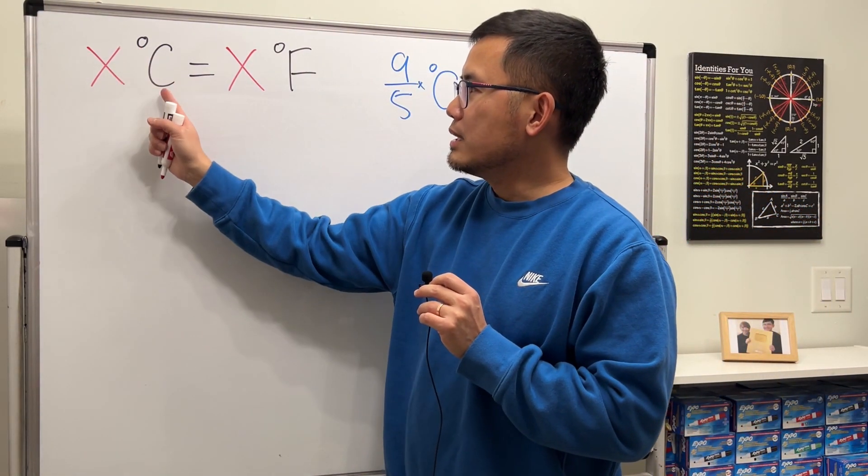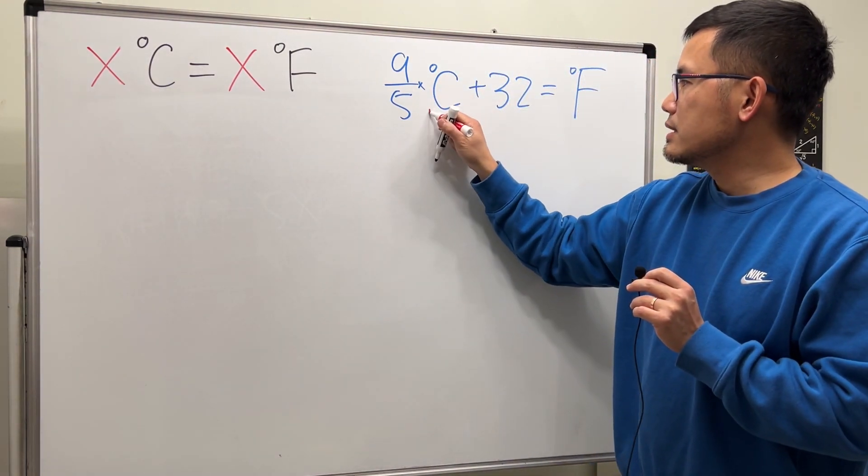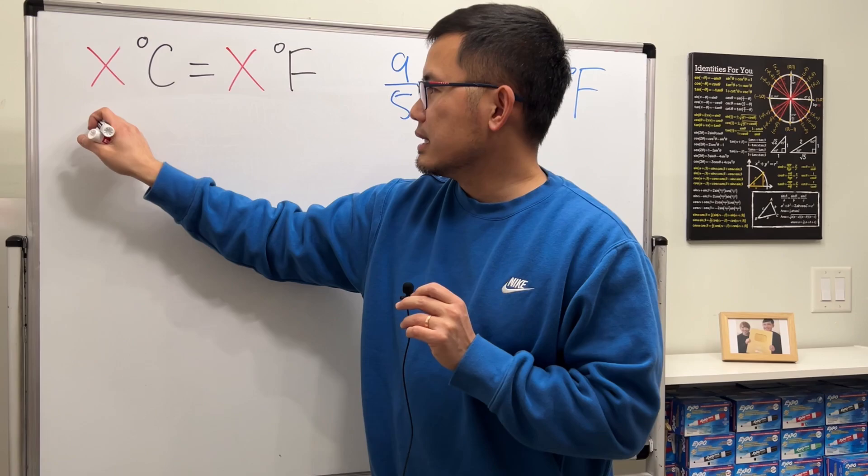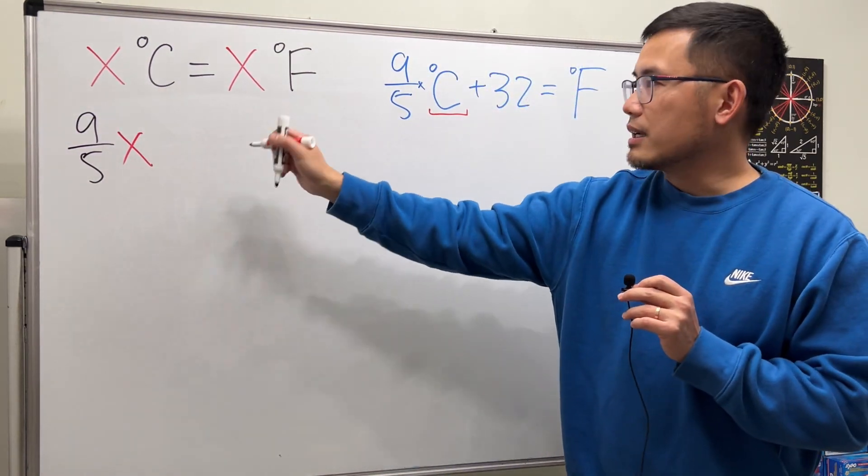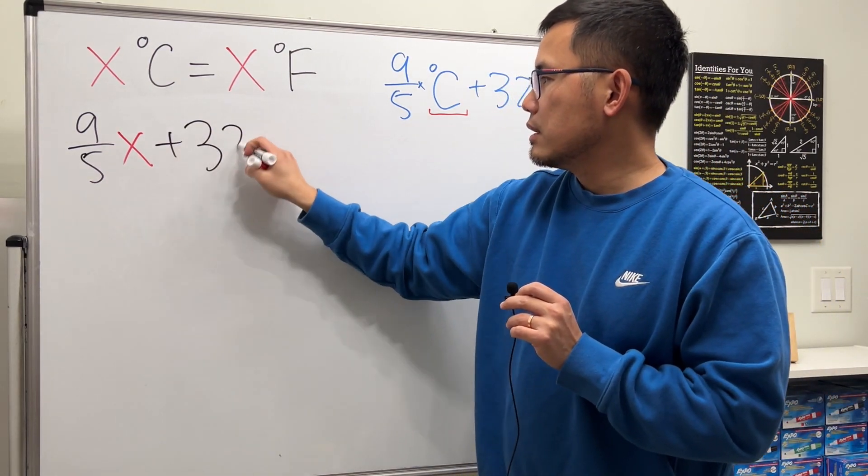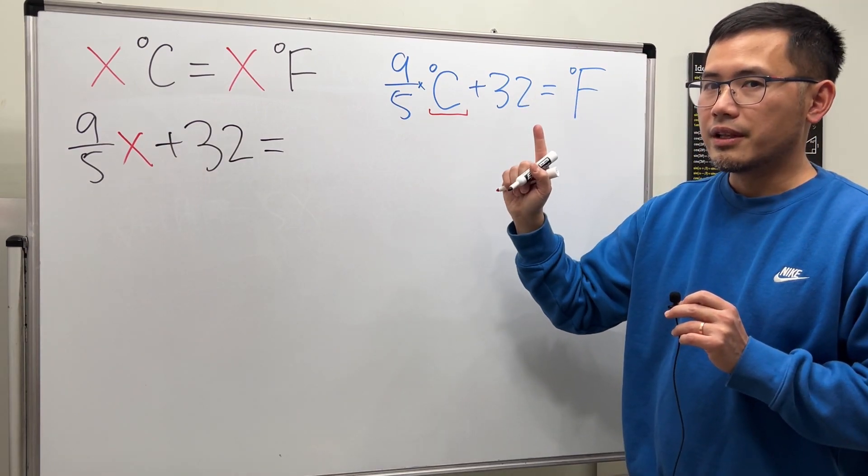We have x degrees Celsius, so put x for the Celsius right here. So we get 9 over 5 times x. Continue, we have to add 32. And after that, make that equal to, here is the thing.